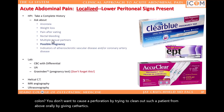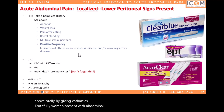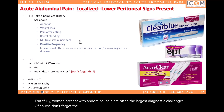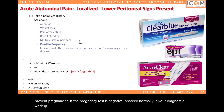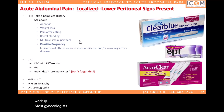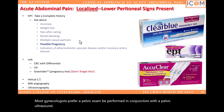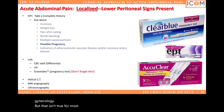Women presenting with abdominal pain are often the largest diagnostic challenges. Of course, don't forget the pregnancy test, even if they tell you they've had a tubal ligation to prevent pregnancies. If the pregnancy test is negative, proceed normally in your diagnostic workup. Most gynecologists prefer a pelvic exam be performed in conjunction with a pelvic ultrasound. Personally, I find CT scanning easier to interpret, but that isn't true for most gynecologists, as they truly are experts at female pelvic ultrasonography.